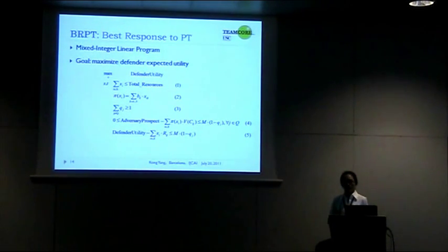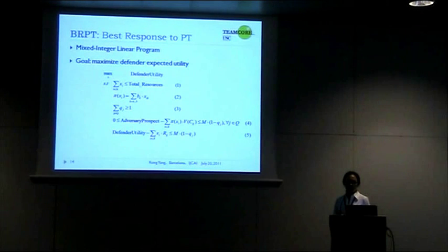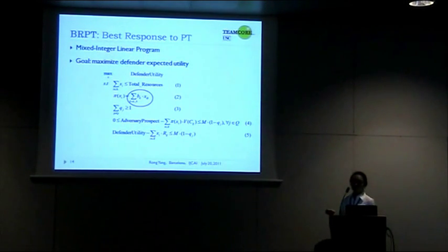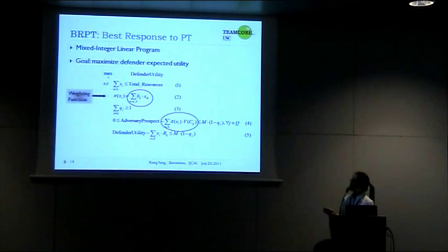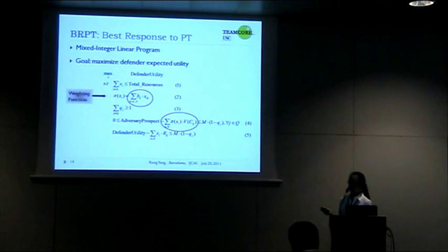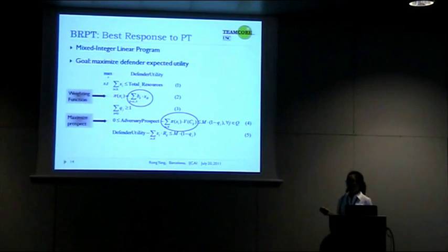Assuming the adversary responds following prospect theory, the question for the defender is what is the optimal strategy to allocate their resources. We formulate this as a mixed integer linear program whose goal is to maximize the defender utility. In equation 2 we use a piecewise linear function to approximate the weighting function, and in equation 4 we compute the prospect of each possible adversary action. The adversary is then forced to select the action that gives them the maximum prospect, and solving this MILP gives the optimal defender strategy.